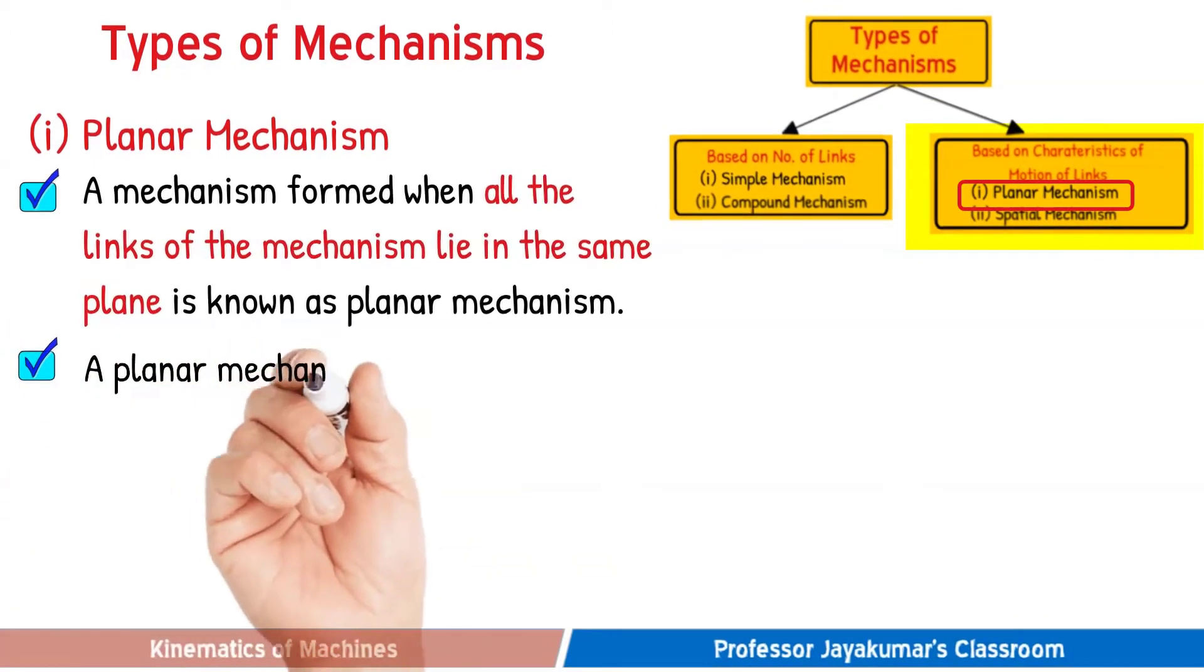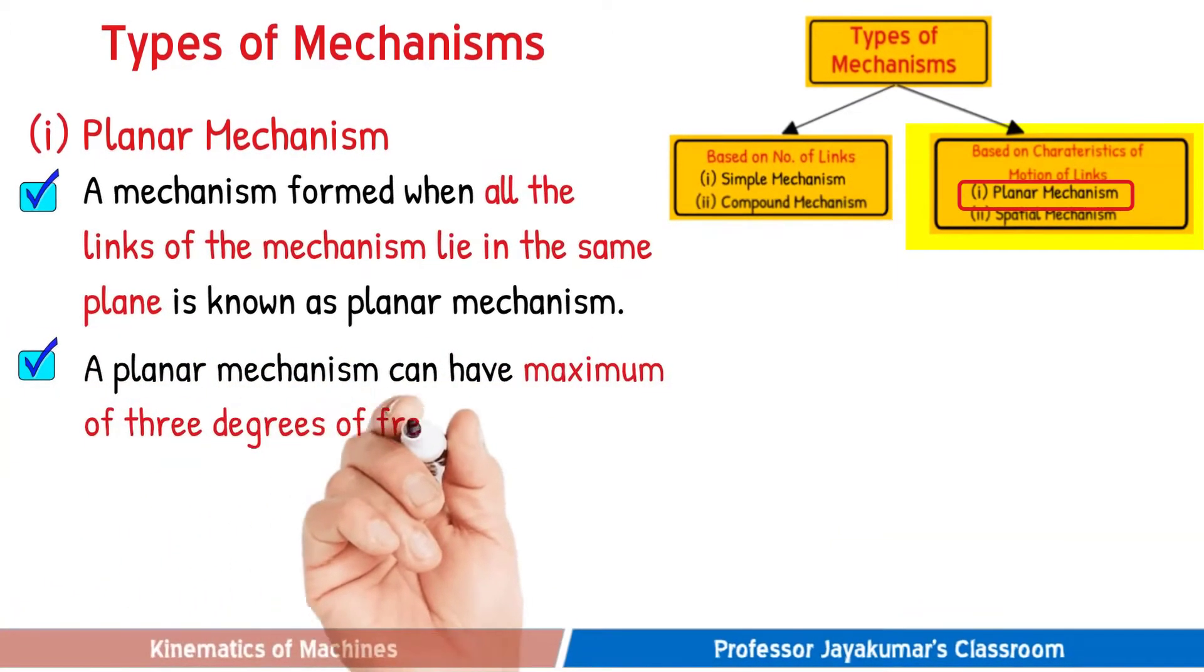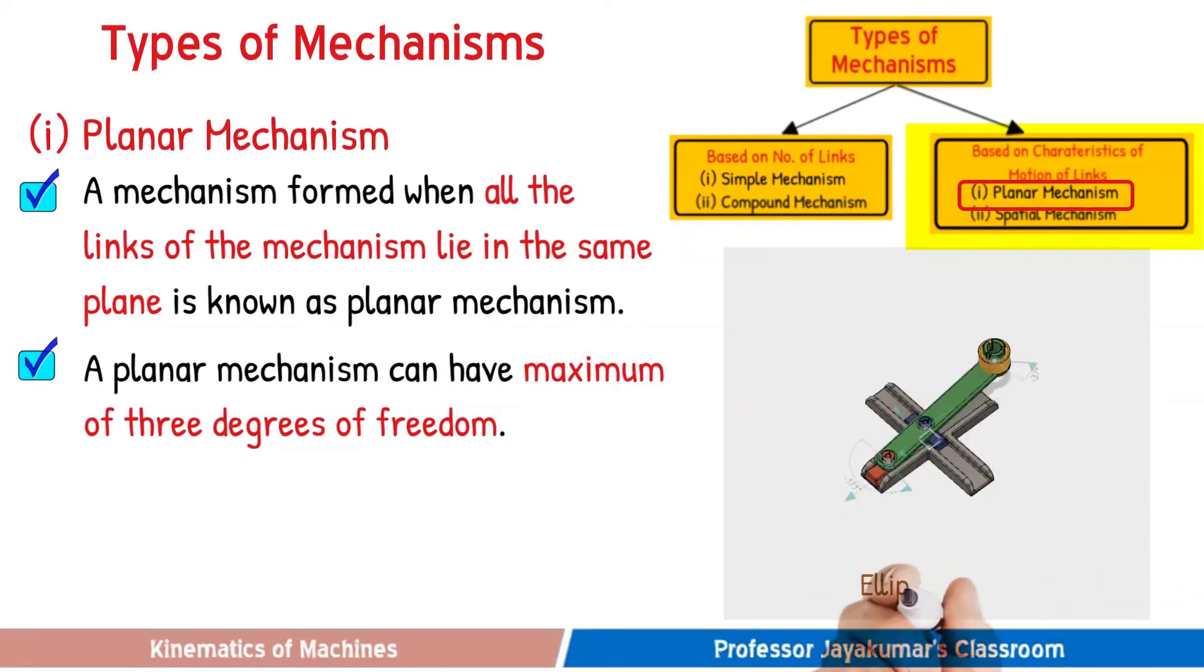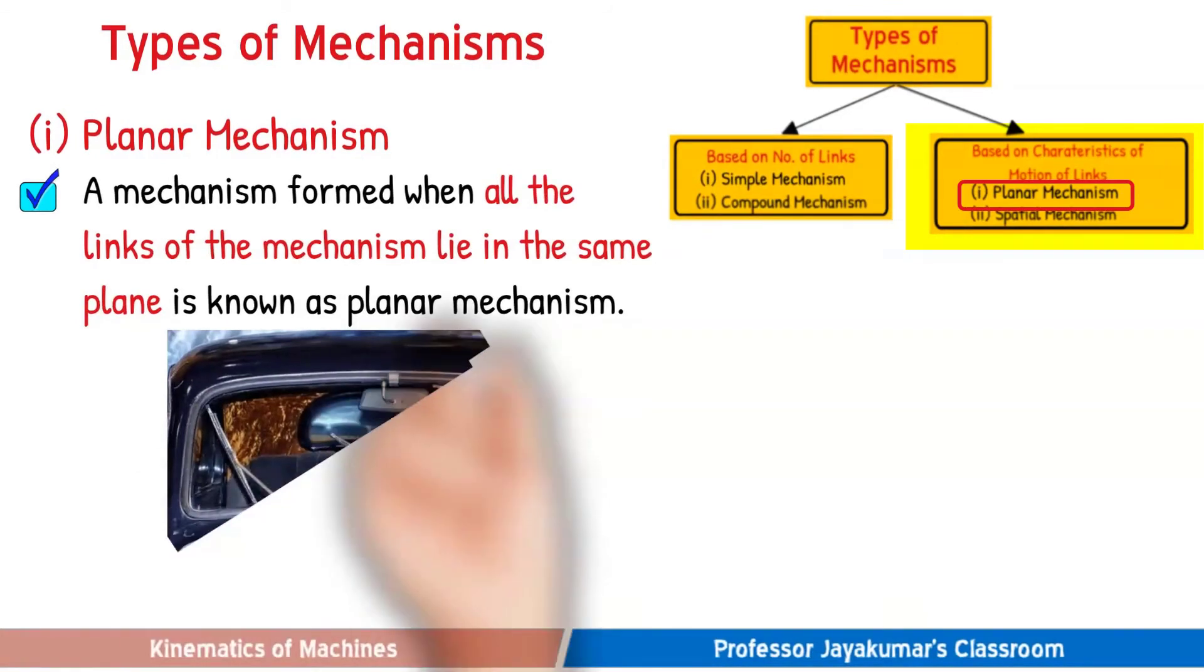Each link of the mechanism can have maximum of two translatory motions in X and Y axis and one rotation about Z axis. And hence, a planar mechanism can have a maximum of three degrees of freedom. Let us see some examples of planar mechanisms.